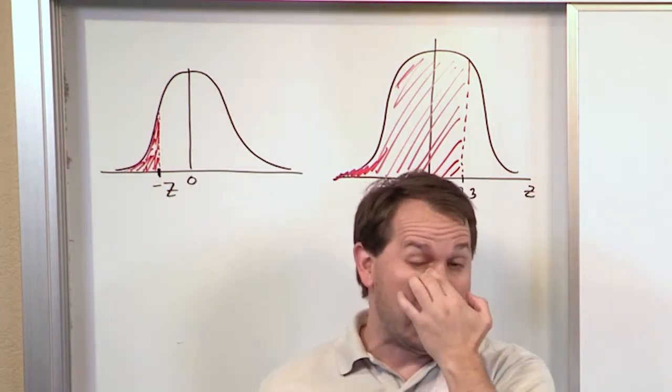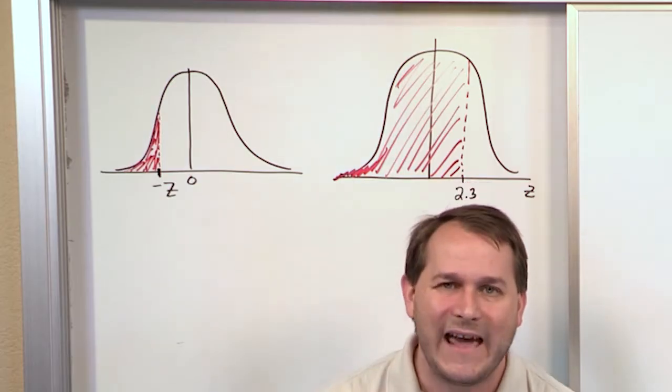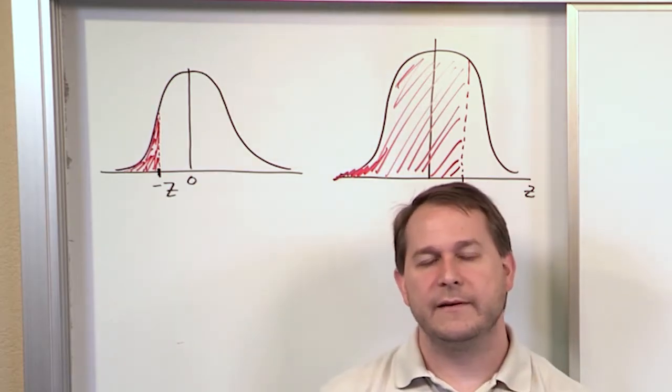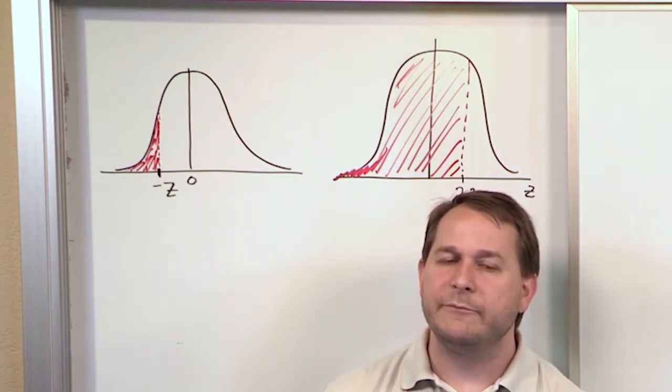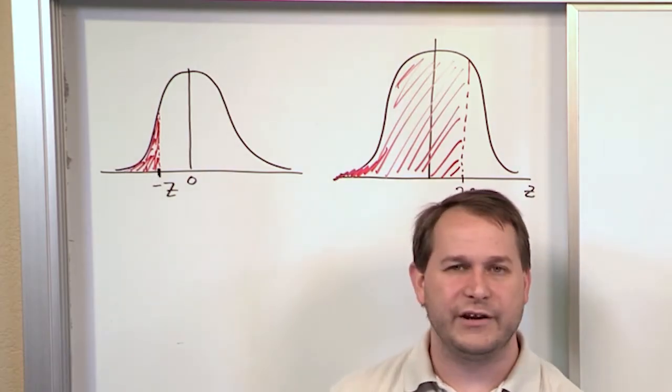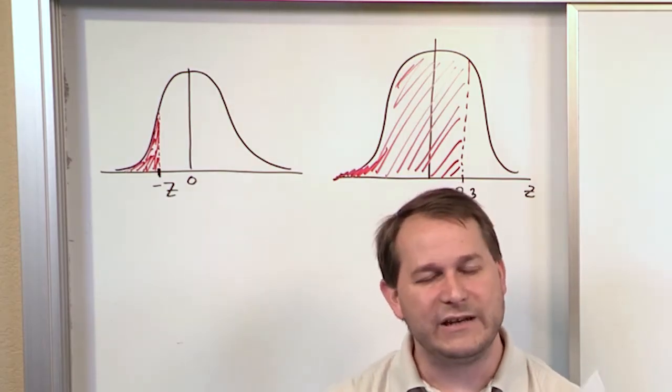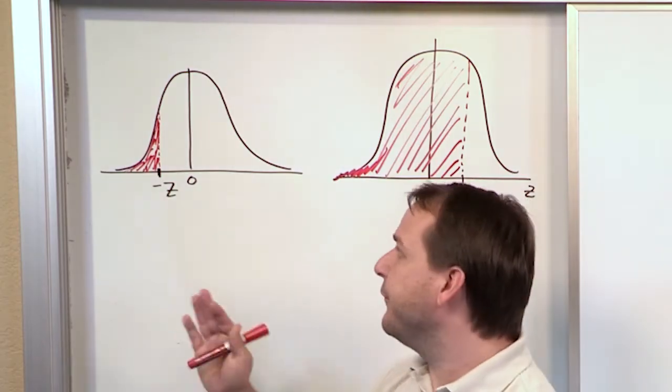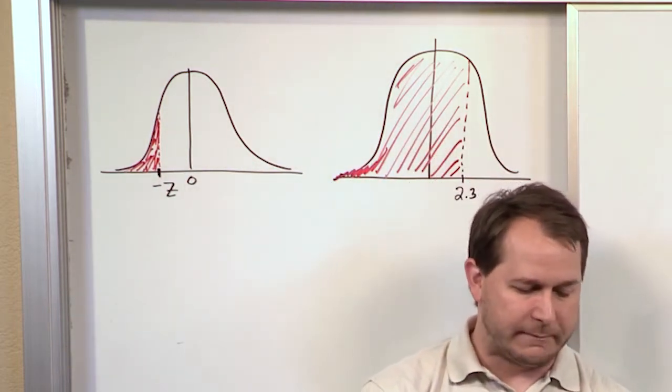That's important because not all problems are going to be phrased that way, but you need to know that that's how the table works. So a lot of times your problem might be easy, and you just look the answer up and circle it. Sometimes you might have to do some things with the answers that you get out of the table and do some calculations with those to get what you're after, but you need to know how the table functions. The table functions by giving you the area always to the left of whatever value you look up.